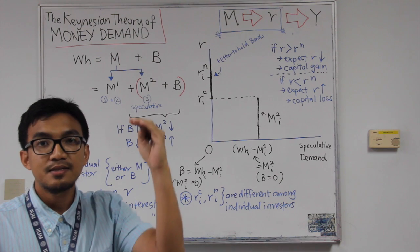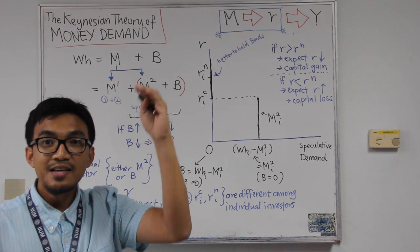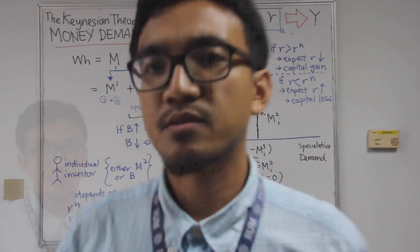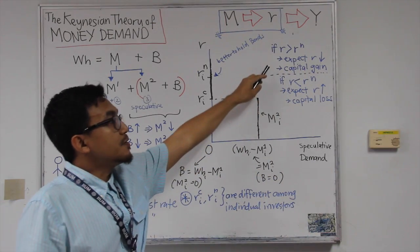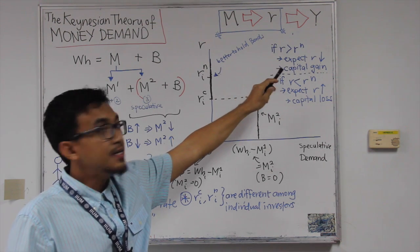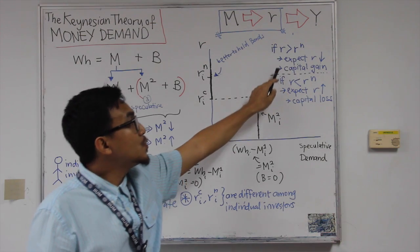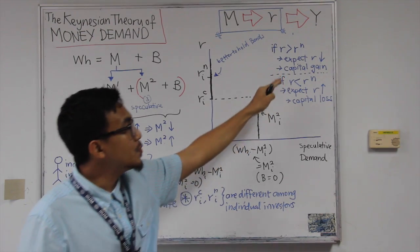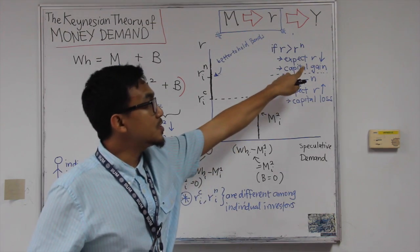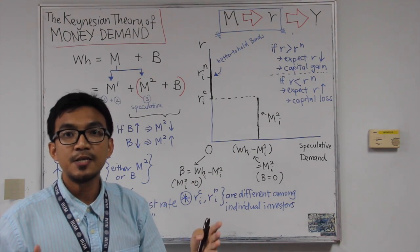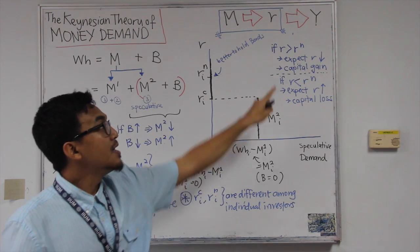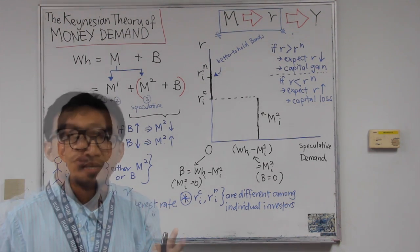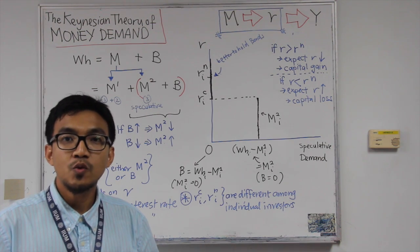If we think that the current interest rate in the market is higher than the normal interest rate, we would expect that the market interest rate will then go down. If the prevailing interest rate is higher than the normal interest rate, we expect interest rate to fall because it's too high. Lower interest rate means there is a possibility for capital gain, so we would like to hold bonds. In that case there will be zero demand for money for speculative reason — it will be better to hold bonds rather than money.